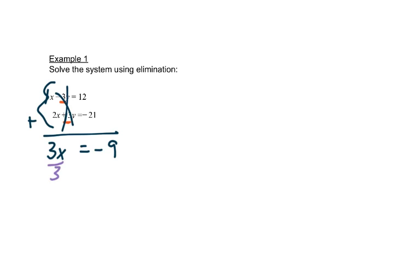So we'll divide both sides by 3. And we get x is equal to negative 3. So we'll go back to either one of the beginning two equations. It doesn't matter which one. Whatever looks easiest.